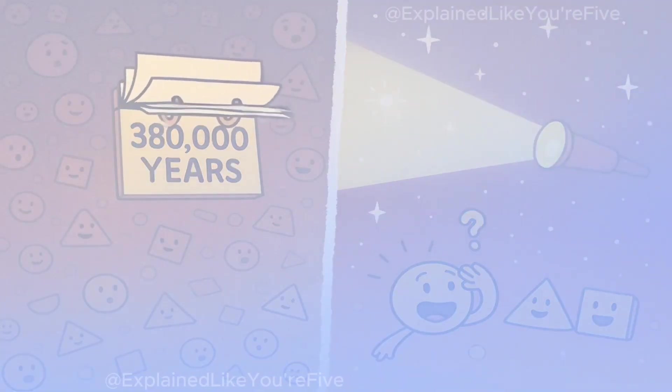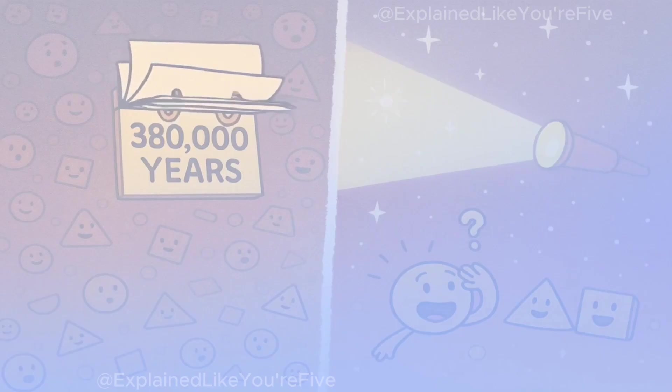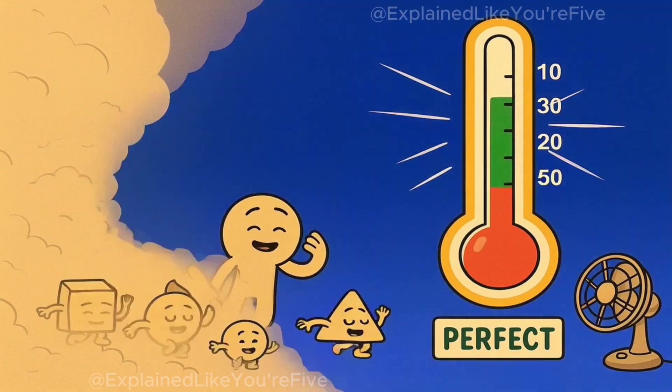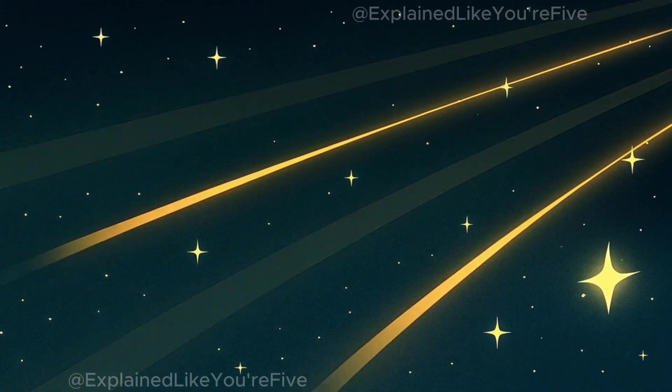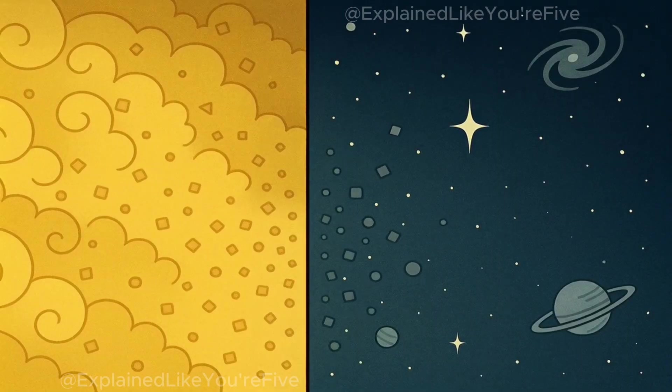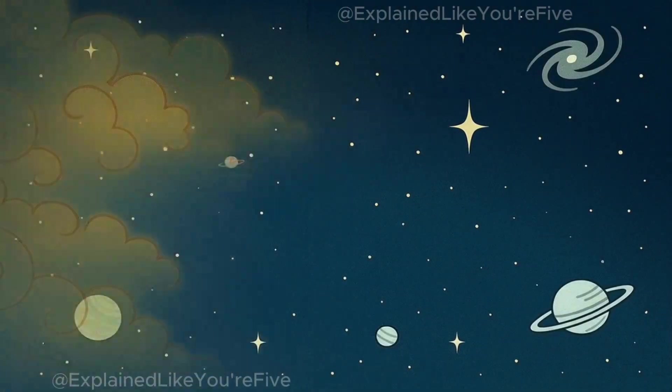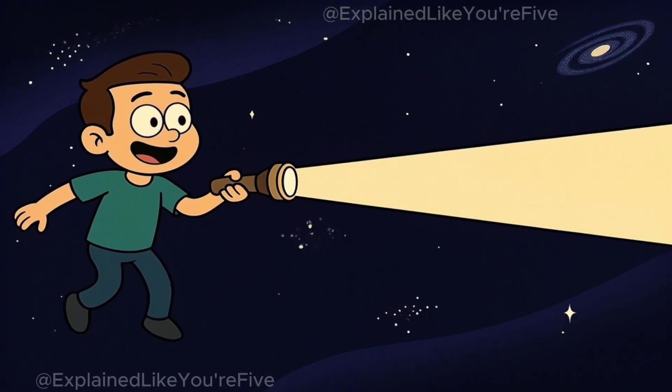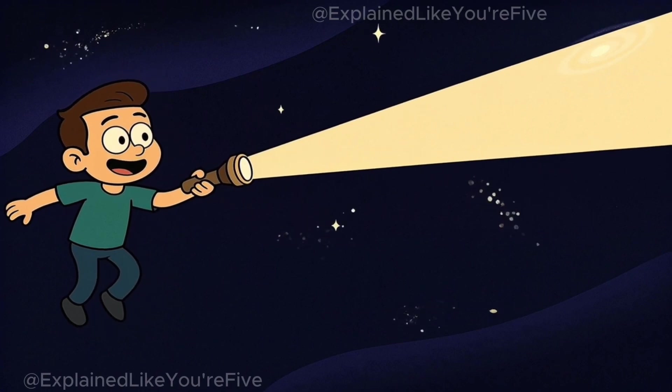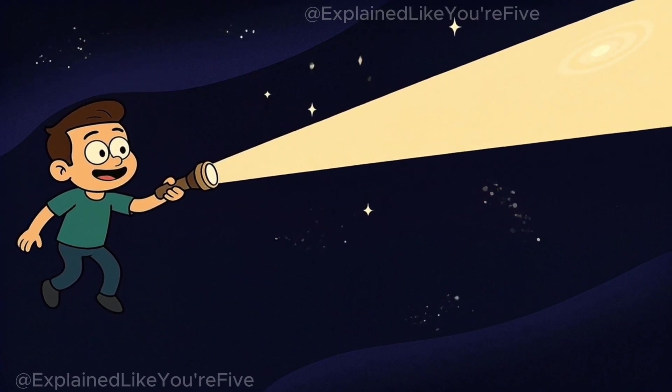Then, about 380,000 years after the Big Bang, something amazing happened. The universe had cooled down enough that the fog cleared, and for the first time, light could travel freely through space. Now, this moment is called recombination, and it's when the universe became transparent. If you had been there with a flashlight, you would have been able to see the light from your flashlight travel across the universe instead of being blocked by all those bouncing particles.